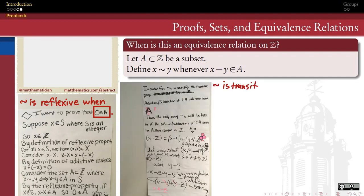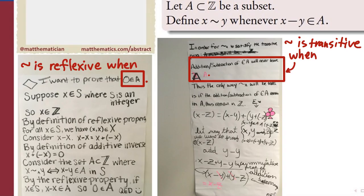What about transitive? What does it take to make this a transitive relation on the set of integers? What has to be true about the set A?